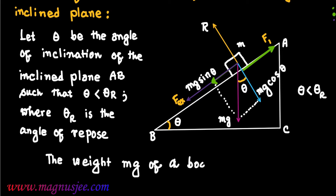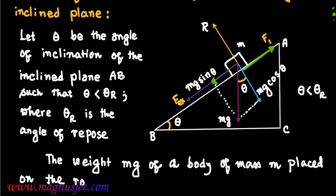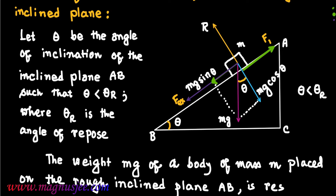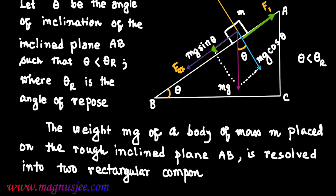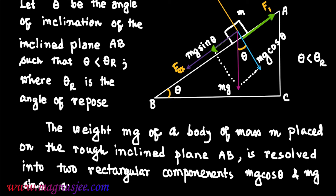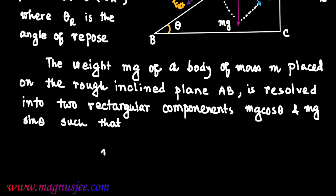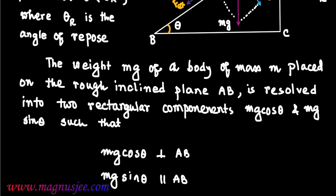The weight Mg of a body of mass M placed on the rough inclined plane AB is resolved into two rectangular components: Mg cos theta, which is perpendicular to the inclined plane AB, and Mg sin theta, which is parallel to the inclined plane AB.